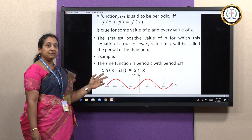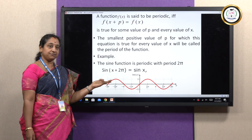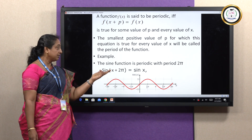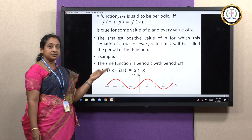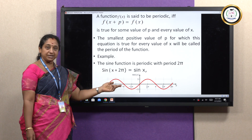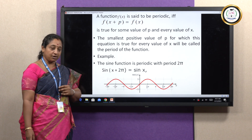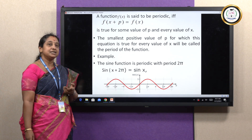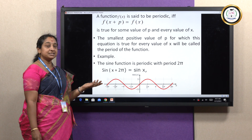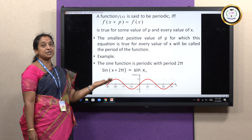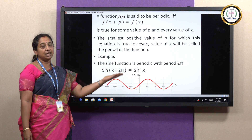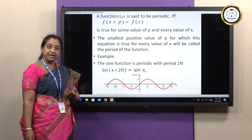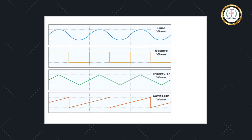Similarly, for the cosine function, the period is also 2π: cos(x + 2π) = cos(x). But for tan(x), the period is π, since tan(x + π) = tan(x).